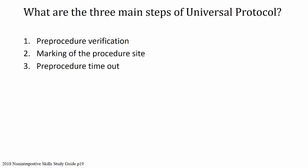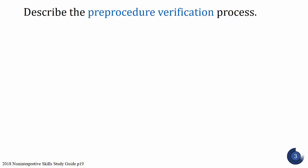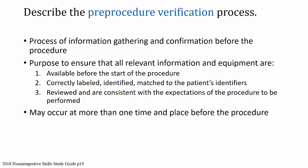Next question: describe the pre-procedure verification process. The pre-procedure verification process is making sure you have all the information and everything you need before you go into the procedure. It's a process of information gathering and confirmation to ensure you have all your information and equipment available before the start of the procedure — correctly labeled, identified, matched to the patient's identifiers, and consistent with the expectations of the procedure to be performed. This may occur at more than one time and place before the procedure — it is a process, not a one-time event.